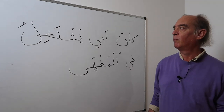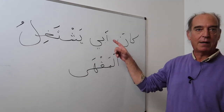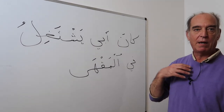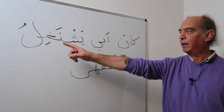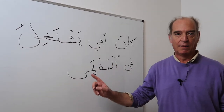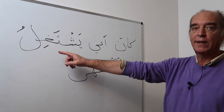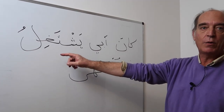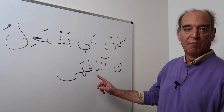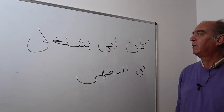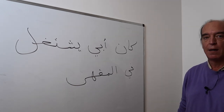Here we have an example with the subject abi — ab means father, abi means my father. Kana abi yashtarilu fil-maqha: my father was working, or used to work, in the cafeteria. Without final vowels, you may hear: kan abi yashtaril fil-maqha.